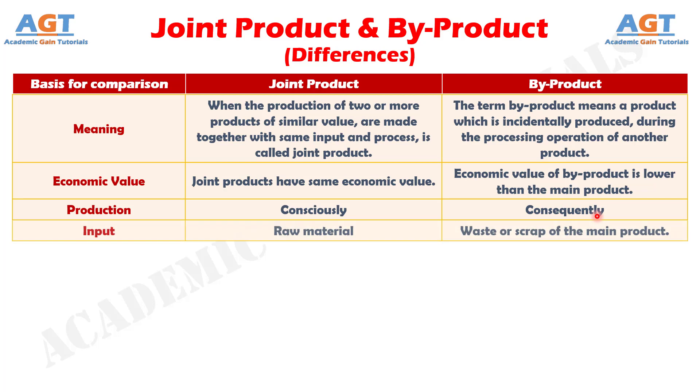No. 4: Joint products are produced from raw materials, unlike by-products, which are produced out of discarded material from the main process.